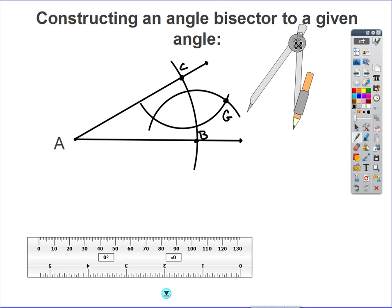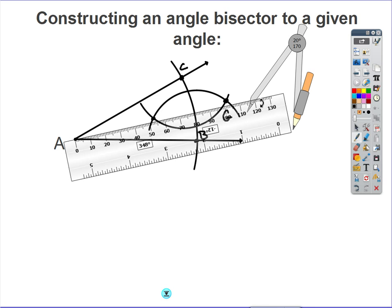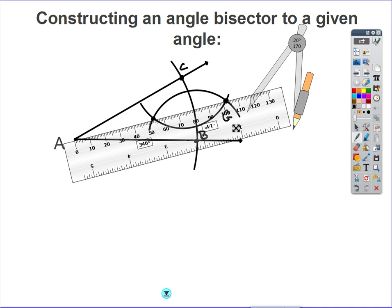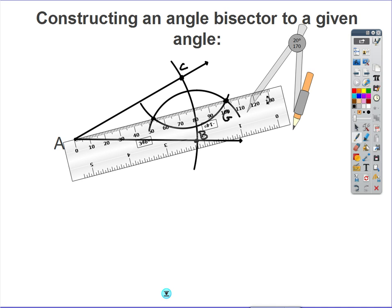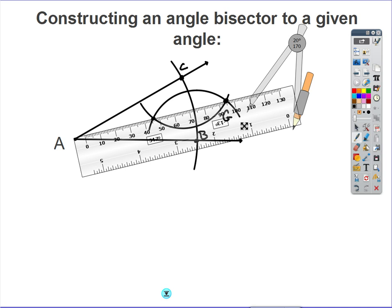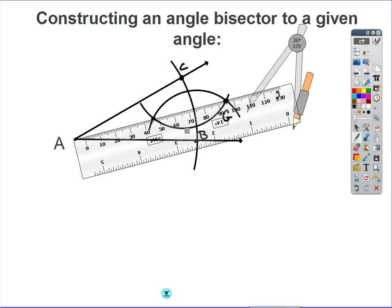Now we're going to use our straight edge and draw a ray that goes through point A and through point G. Because we intersected twice, there's a third point that we can draw our line through. So as I take my straight edge, I can rotate this so that it goes through all three points right there. Just to make sure we're lined up as best we can, looks good.